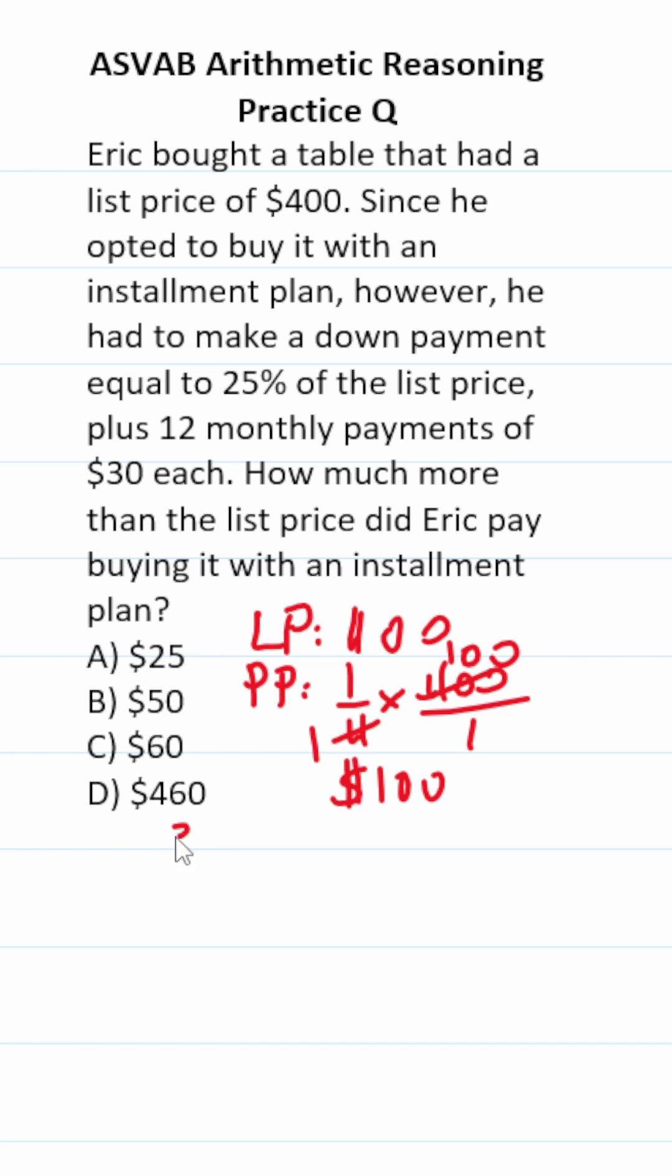Next, we're told that we have 12 monthly payments of $30, so we'll multiply that out. That's going to be 360, of course.